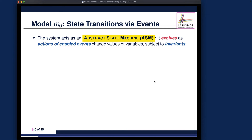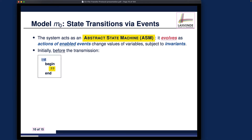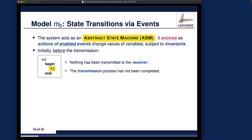Luckily we only have two events for this initial model, thanks to its simplicity. The first one is the init event — what should happen to the state value before transmission? This is the special init event, which is unconditional, meaning it has no guards. The two hints are: nothing has been transmitted to the receiver initially, and the transmission process has not been completed. These are consistent with how we have described the protocol so far.